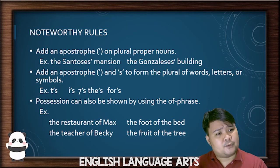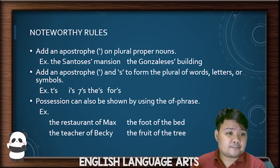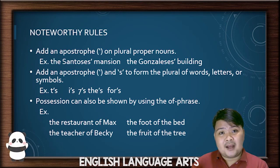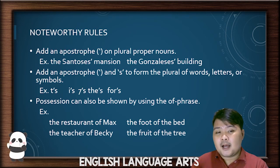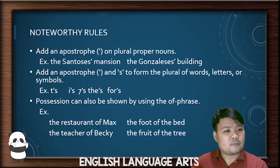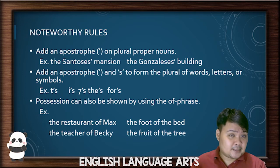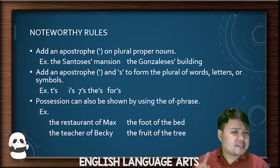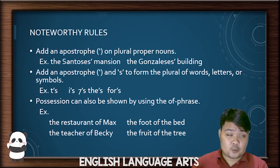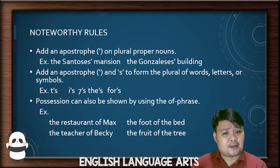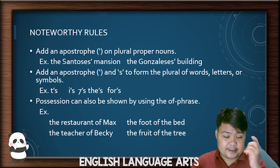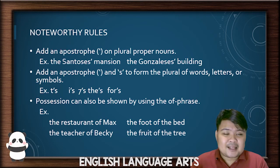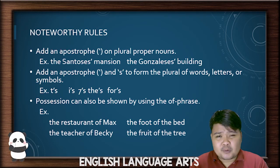There are certain noteworthy rules to take note of. For plural proper nouns — like a family named Santos or Gonzales — the plural forms are Santoses and Gonzaleses, and you only add an apostrophe: Santoses' mansion, Gonzaleses' building. Also, when you want to make a letter, term, or number plural — like a lot of letter T's or a lot of number sevens — you add an apostrophe and then S. This is the only case where you do this. In any other situation where you want to make something plural, no apostrophe.